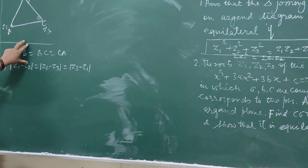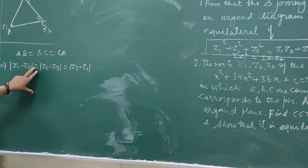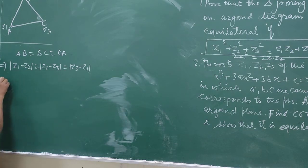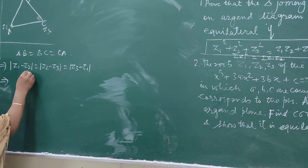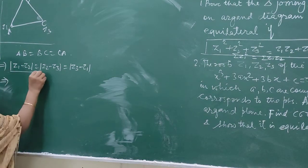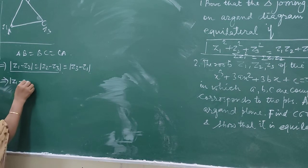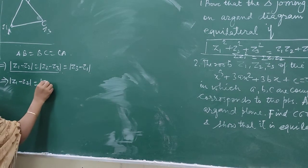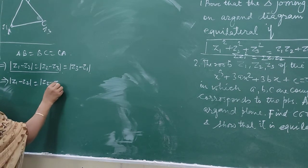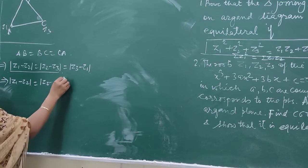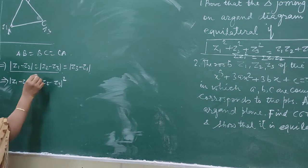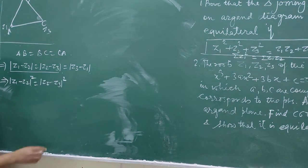This triangle is equilateral if this condition is satisfied. Now we are going to simplify and collect. We have Z1 minus Z2 equals Z2 minus Z3, which means the squares are also equal.